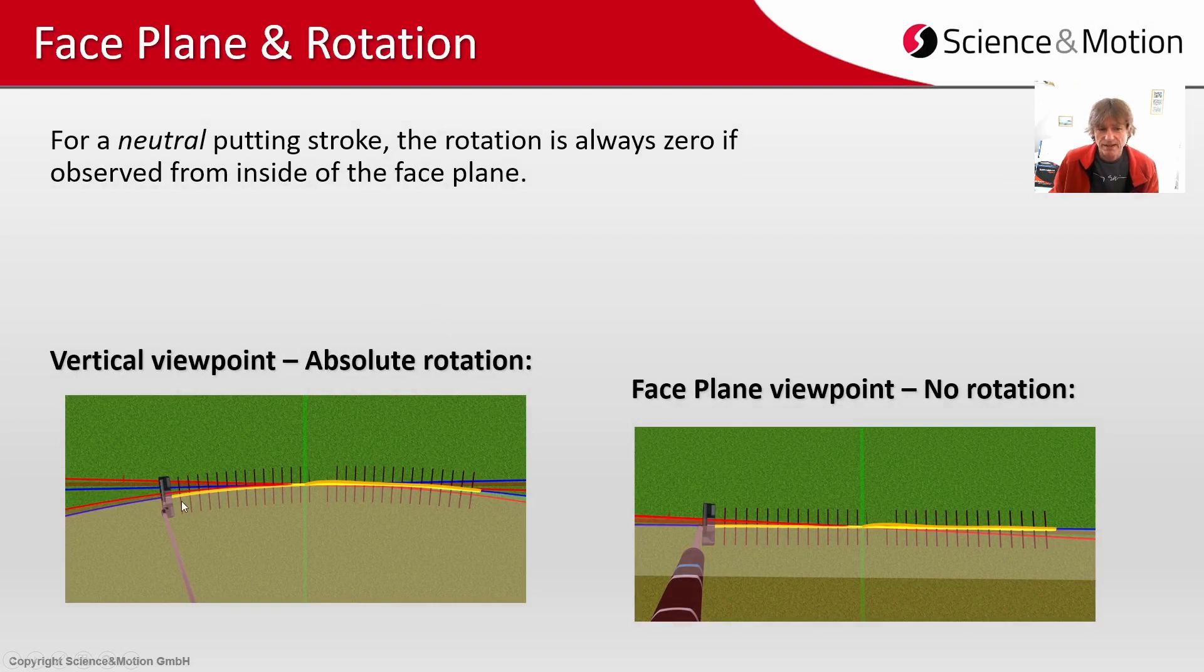Now in the same way from the bird's eye view with the eye over the ball the putter will open and close so there will be rotation against the target line. But if you look from within the face plane onto your putter face there is no more rotation for a neutral putting stroke. And again we can say that absolute rotation is also some kind of optical illusion because the eye is outside of the plane.